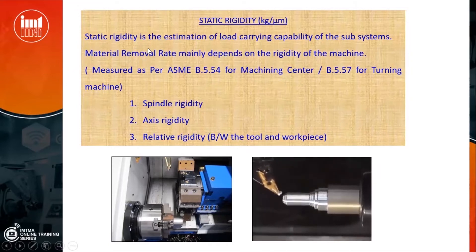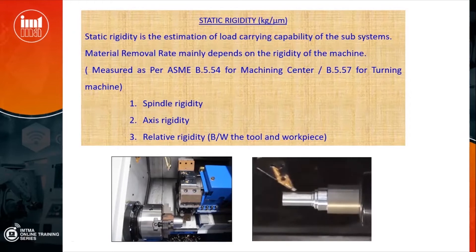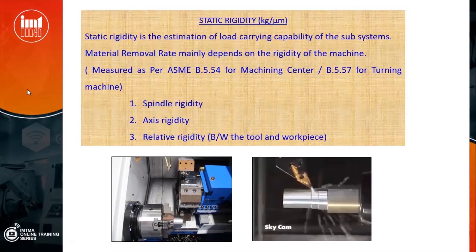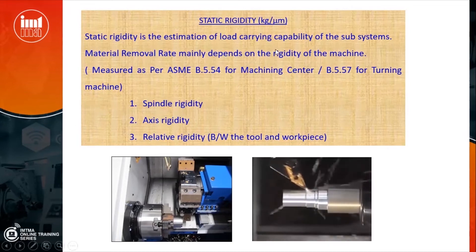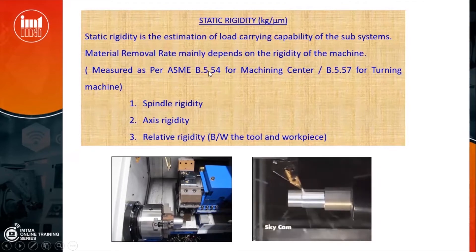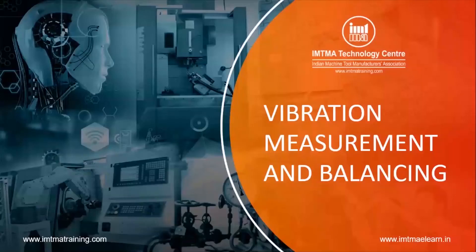Sometimes your spindle may have high rigidity but your axis may not be rigid enough, causing tool deflection. For example, on a turning machine, if the spindle is very rigid but the axis system is not, the axis will deflect under cutting load. We must consider both spindle rigidity and axis rigidity, as well as relative rigidity. We measure static rigidity per ASME B5.54 for machining centers and ASME B5.57 for turning machines.